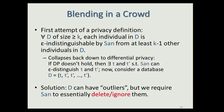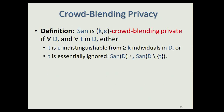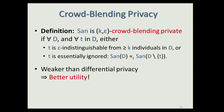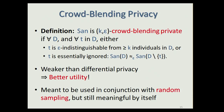The solution is to allow the database to contain outliers — people who are not indistinguishable from sufficiently many others — but require the mechanism SAN to essentially delete or ignore these outliers. Formally, a mechanism SAN is K-epsilon crowd blending private if for every database D and every individual T in the database, either T is epsilon-indistinguishable from at least K individuals in D, or T's data is essentially ignored, meaning that even if we remove T from the database, the output distribution of the mechanism changes by at most an epsilon amount.